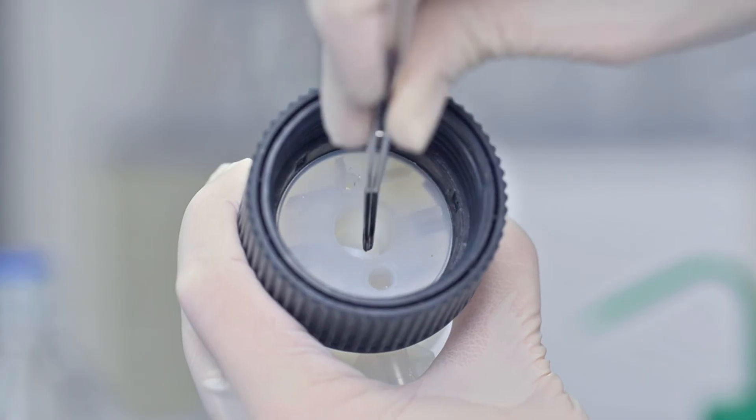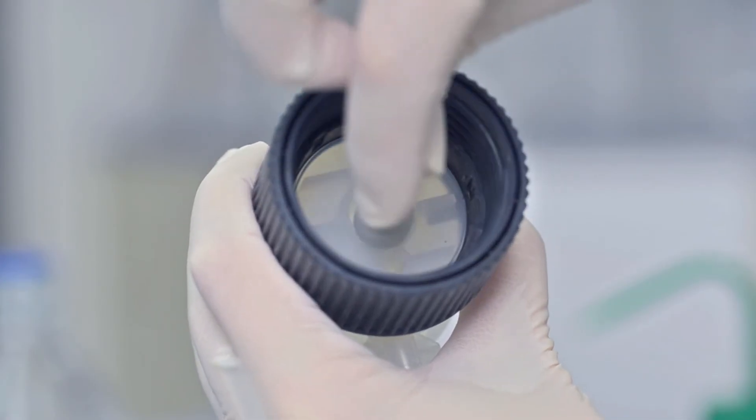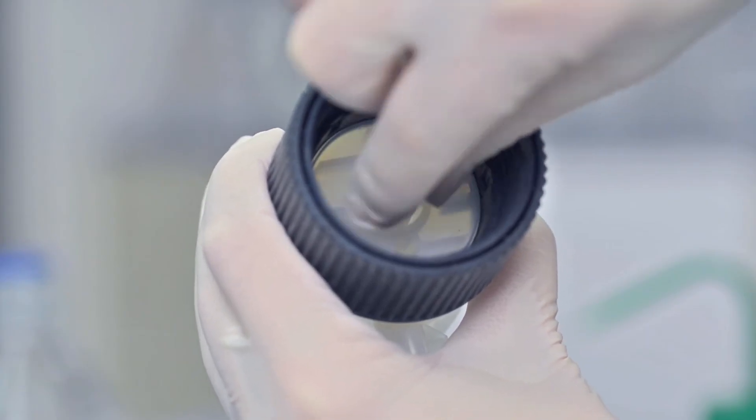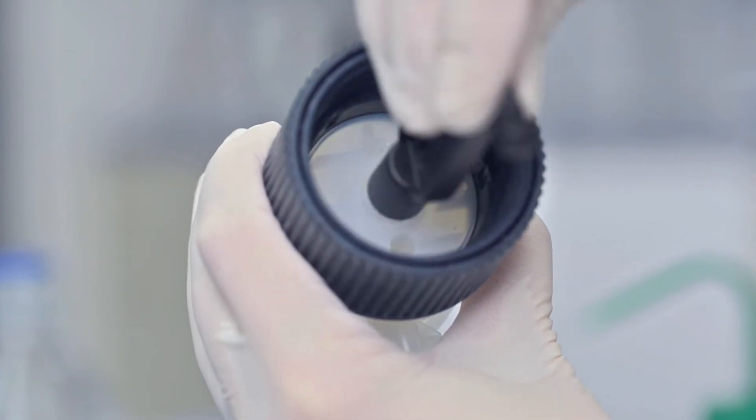Reinsert the clean seal. Then screw in the filling valve by hand and secure it by a quarter turn with the mounting tool.